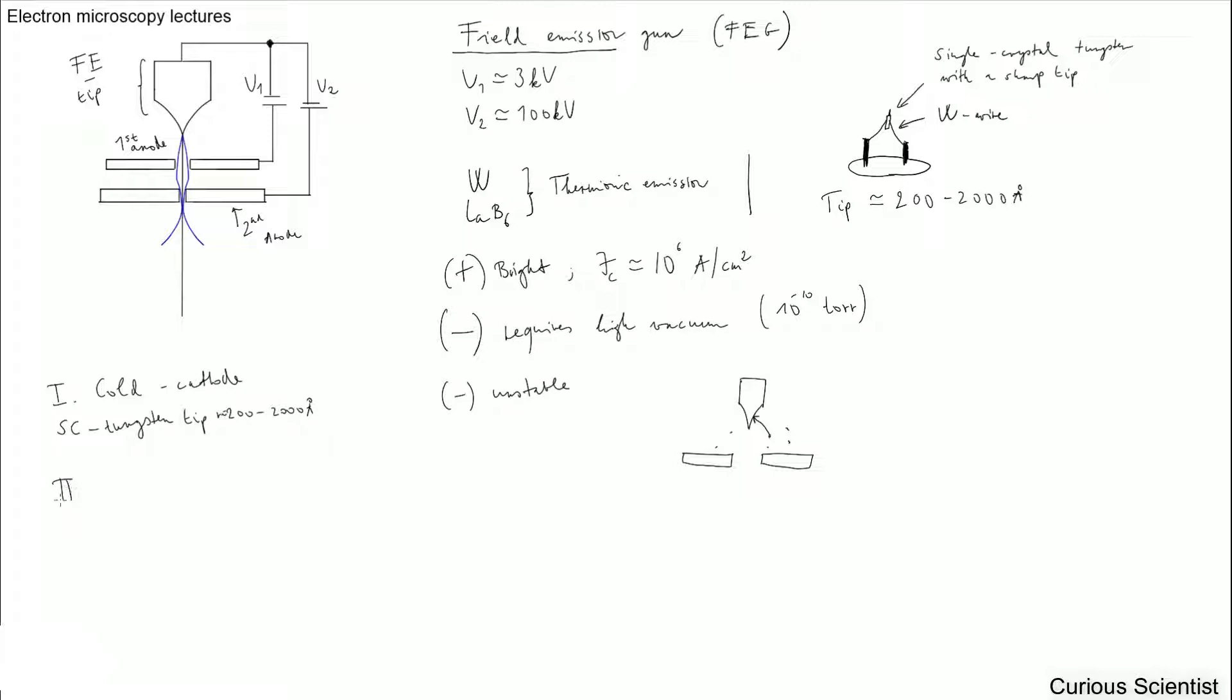And there is the second type, which is the warm cathode. And it's often called the Schottky type. So Schottky type cathode, which is assisted with thermionic emission. So basically we have a tungsten tip, but it is coated with some sort of zirconium oxide in order to lower the work function.